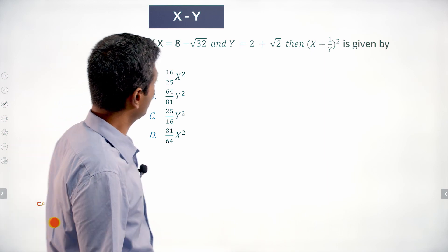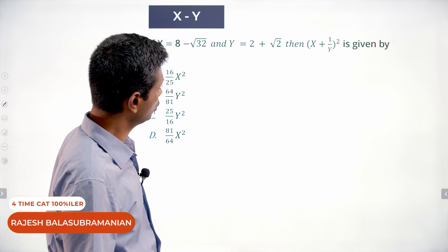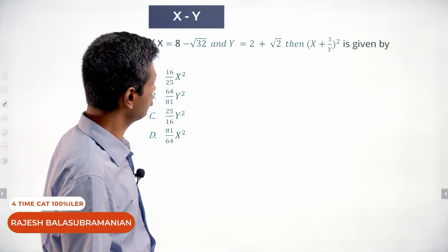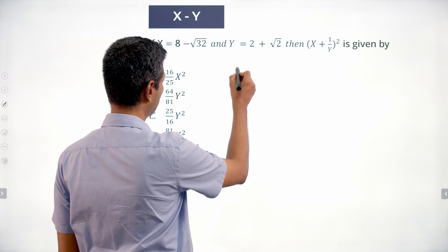x is 8 minus root 32, y is 2 plus root 2, then x plus 1 by y whole square. Let's first find 1 by y.